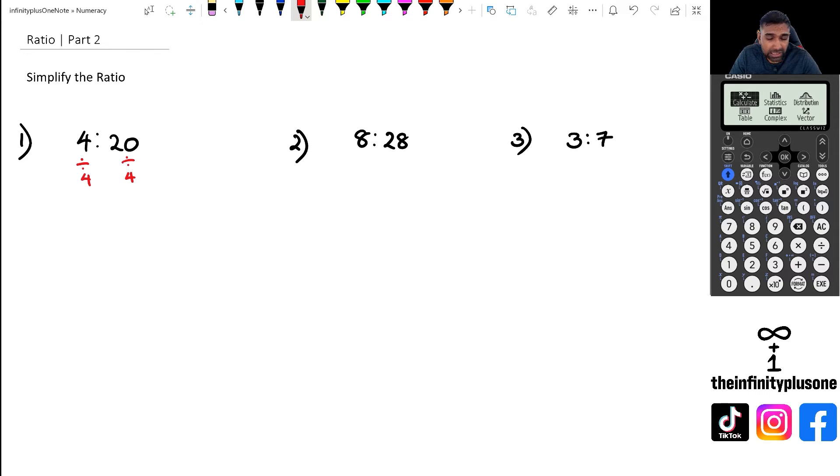Ratios work in the same way as fractions do. Whatever you do on one side you've got to do on the other side as well, but in fractions it's whatever you do in the numerator you've got to do in the denominator as well. So in this particular case I've got 4 divided by 4 which is 1, and then 20 divided by 4 is actually 5. So what this is telling me is that for every one there's actually five of the other item.